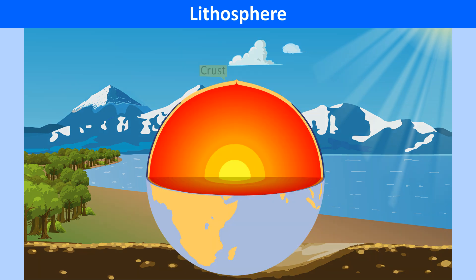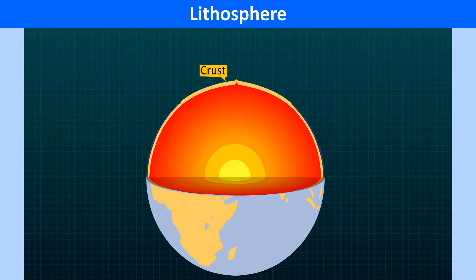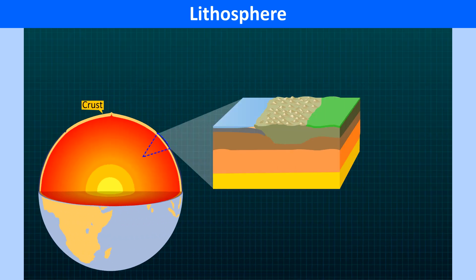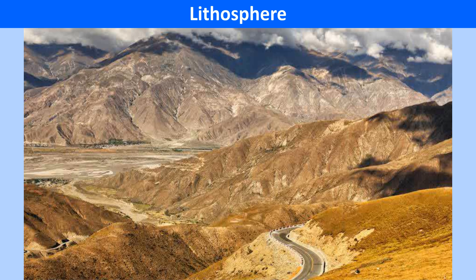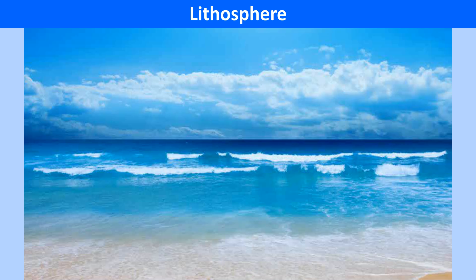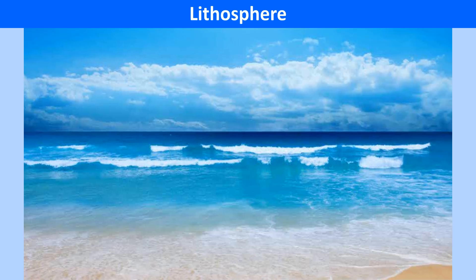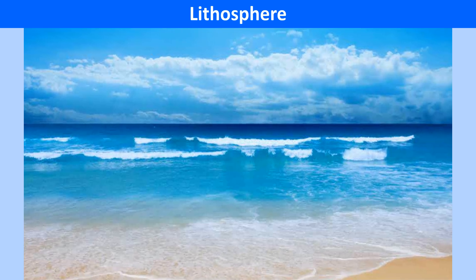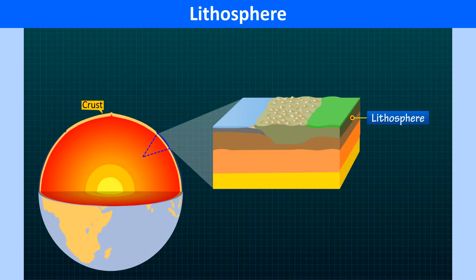The outermost solid layer of the earth is called the lithosphere. It is also called the crust of the earth. This realm consists of the large land masses of the continents and the huge water bodies called the oceans. It is here that we find mountains, plateaus and plains.